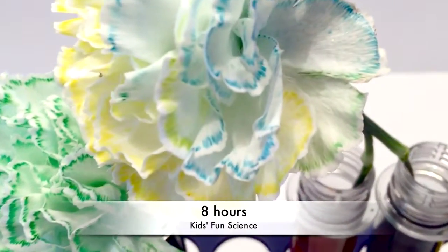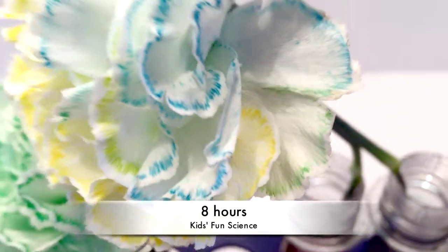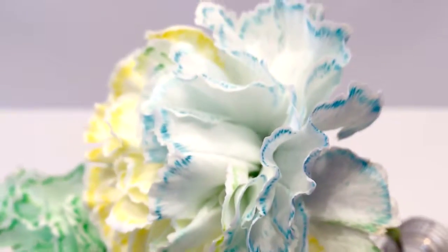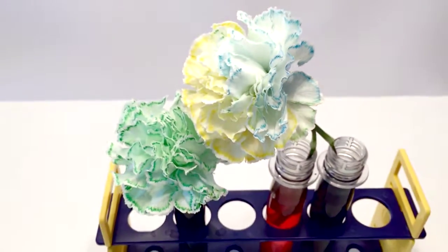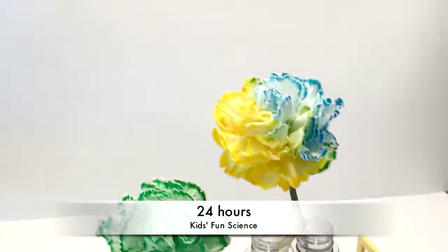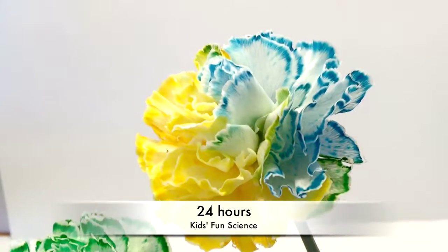Here's the experiment with the stem half in the yellow and half in the blue, and you can see about eight hours in, half the carnation is blue and half is yellow with a couple leaves turning green. 24 hours in, it's a lot brighter with just a tad more green.